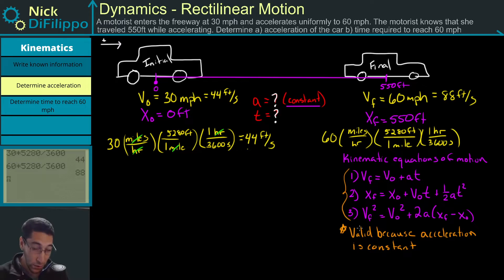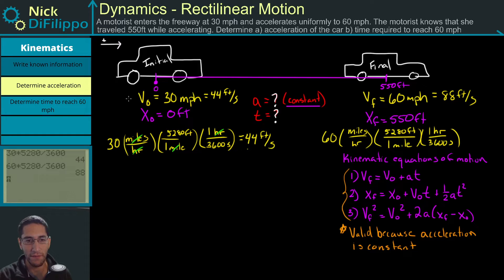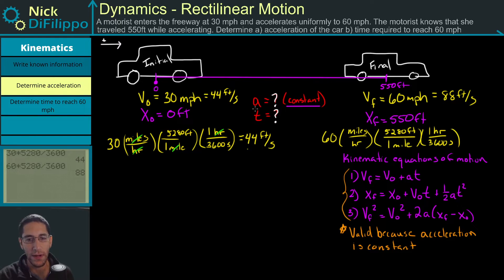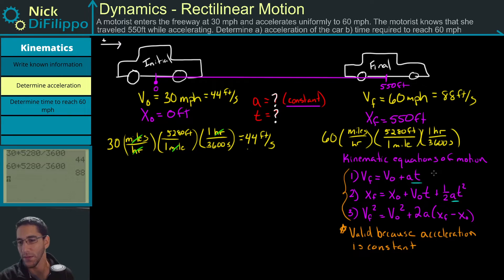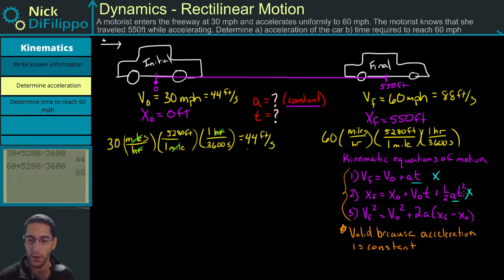We have to look at the information we have: initial and final velocities, and initial and final positions. We don't have acceleration or time. Equations one and two both rely on acceleration and time, so using them would give two unknowns in one equation. If we use equation three, the only unknown is acceleration, so we want to pick that equation.